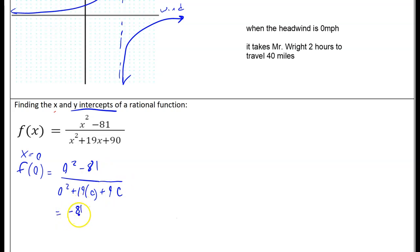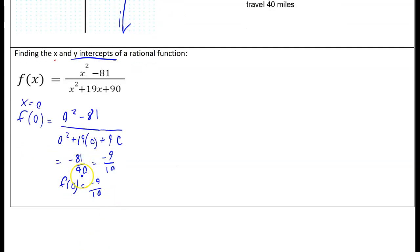I get on the bottom 0 squared plus 19 times 0 plus 90. Everything sort of cancels out. I get negative 81 over 90, which we can then simplify to negative 9 over 10. So that's my y-intercept. I could write f of 0 is negative 9 over 10, or in point notation, that would be the point (0, -9/10).